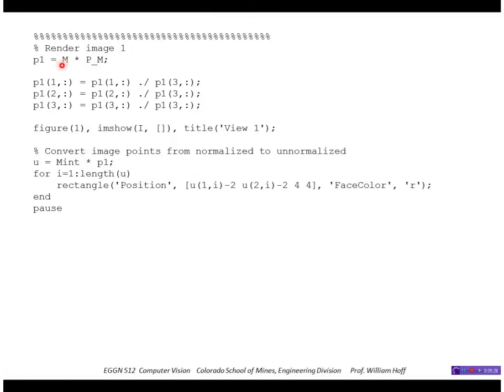And here's rendering image 1. I simply multiply that intrinsic and extrinsic parameter matrices times the model. And of course divide through by the third element. And then those points now are in normalized coordinates. So to convert it to unnormalized coordinates, I multiply by the intrinsic parameter matrix M int here.